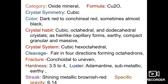Cuprite luster is adamantine, sub-metallic, or earthy. Streak is shining metallic brownish red. Sometimes if a mineral is tough to identify on the basis of color, it is identified on the basis of streak. The streak is the color of the powder produced when you crush or rub the mineral. Specific gravity is 6.14.